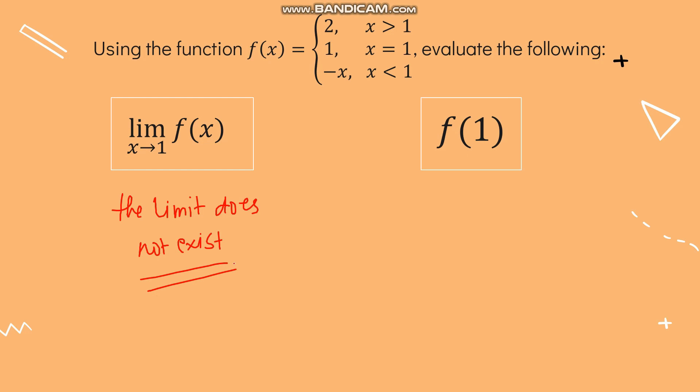If we evaluate f(1) directly, we use the second sub-function (the one defined at x = 1), giving a value of 1. This shows that f(c) and the limit are two different things. The limit might not exist, but f(c) can still have a value. There are cases where substituting c works, but it is not always valid because technically their concepts are different.